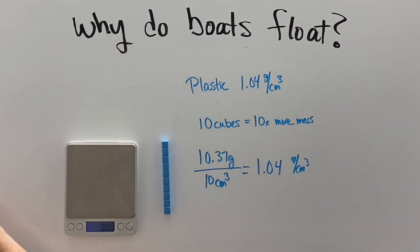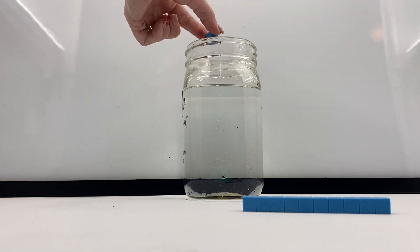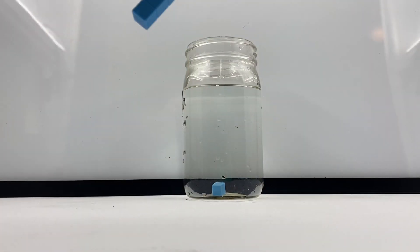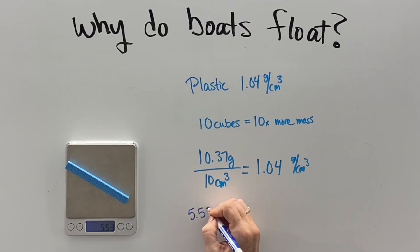Here I have a tens piece. Let's drop them both in water. Well, the single cube at 1.04 is more dense than water, but the tens cube floats. What's going on?